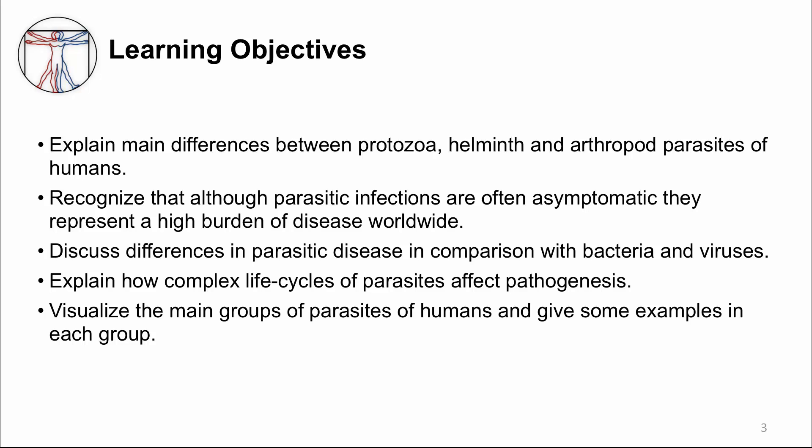The learning objectives are to explain main differences between protozoa, helminth, and arthropod parasites of humans. To recognize that although parasitic infections are often asymptomatic, they represent a high burden of disease worldwide. To discuss differences in parasitic disease in comparison with bacteria and viruses. To explain how complex life cycles of parasites affect pathogenesis. And to visualize the main groups of parasites of humans and give some examples in each group.